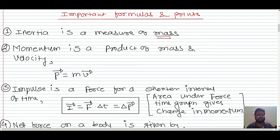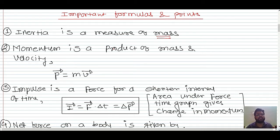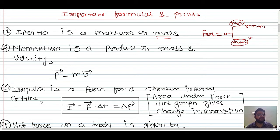Because of inertia we can define Newton's First Law, also called the Law of Inertia: every body continues to be at rest or in motion unless and until an external unbalanced force acts on it. If F_external is zero, a body at rest remains at rest, and a body in motion remains in motion.